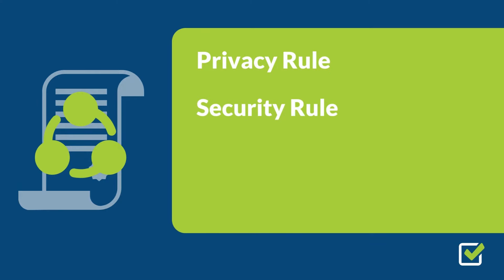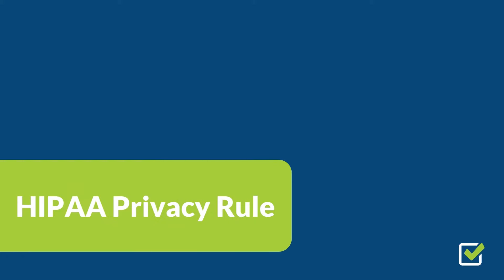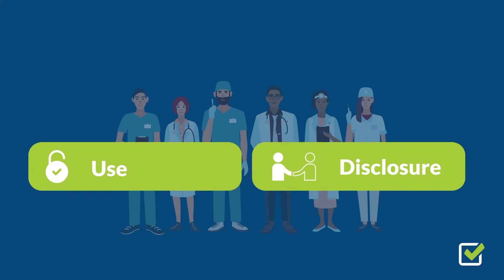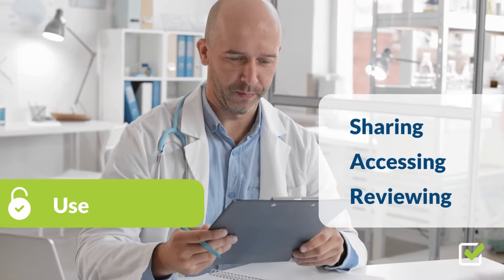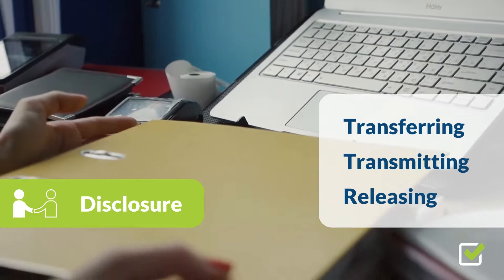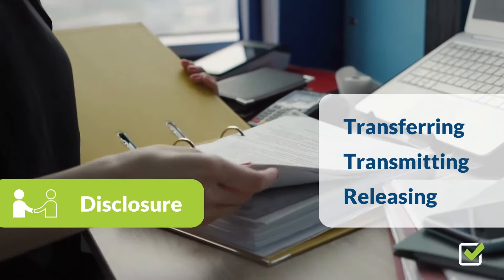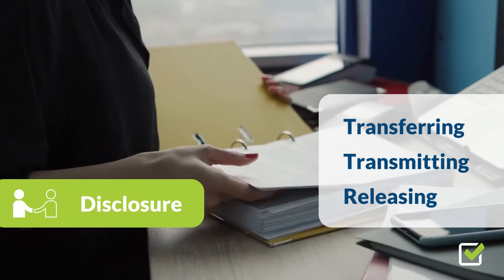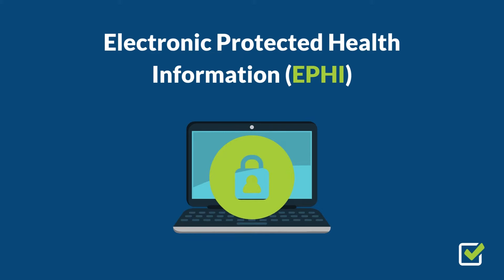The four rules are: the Privacy Rule, the Security Rule, the Breach Notification Rule, and the Omnibus Rule. The HIPAA Privacy Rule outlines what constitutes Authorized Use and Disclosure of Protected Health Information, or PHI. Authorized Use means sharing, accessing, and reviewing PHI within the organization. Authorized Disclosure means transferring, transmitting, or releasing PHI outside of the organization.